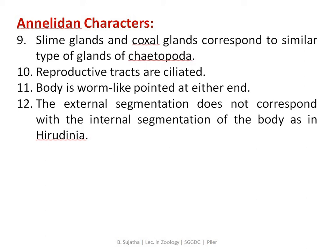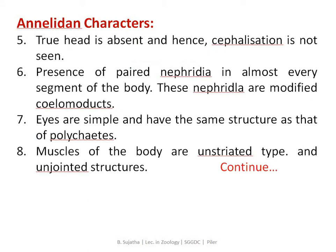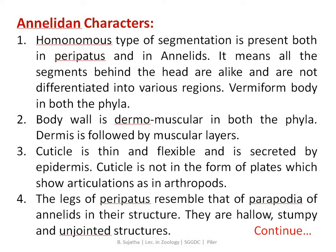The body is worm-like and pointed at both ends. The external segmentation does not correspond with the internal segmentation of the body, as in hereditary annelids. External segmentation does not correspond with internal segmentation — but segmentation is present. The first annelid character is this homonome type of segmentation.